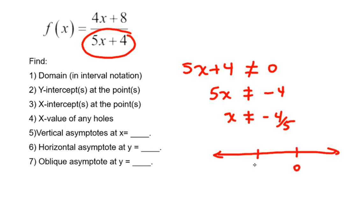So if negative 4 over 5 was here on the number line, we would be saying don't include that. Anything on either side is fine, but not that. So we do that with a union.